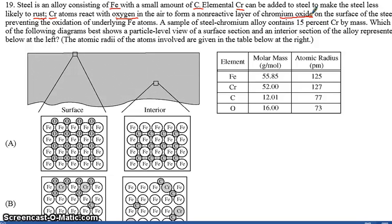A sample of steel chromium alloy contains about 15% chromium by mass. Which of the following diagrams best shows a particle level view of a surface section and an interior section of the alloy? We're taking a sample of the surface and the interior, and which of these match up?